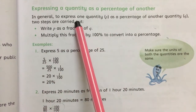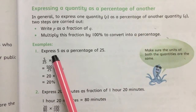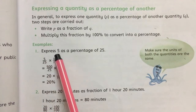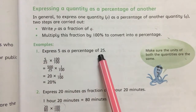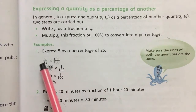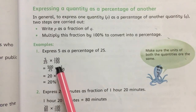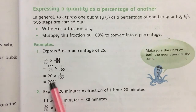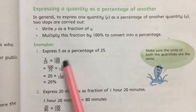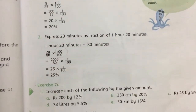This topic is about how to express one quantity as a percentage of another. For example, to express 5 as a percentage of 25 — meaning what is the percentage of 5 in 25 — we write it as 5 by 25 and multiply by 100 percent, then simplify. The percentage of 5 in 25 is 25 percent.